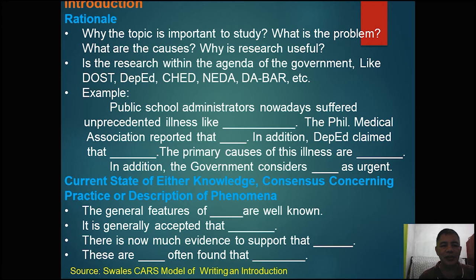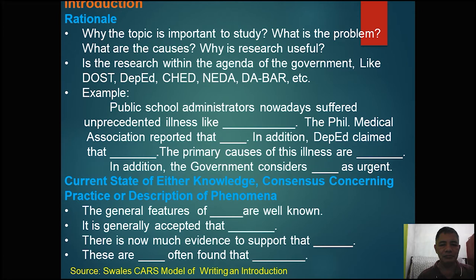Is the research within the agenda of the government — like the Department of Science and Technology, Department of Education, Commission on Higher Education, National Economic Development Authority, Department of Agriculture, Bureau of Agricultural Research, and others? These are the components of your rationality. I have here an example of statements related to the title I mentioned, about the rationality.